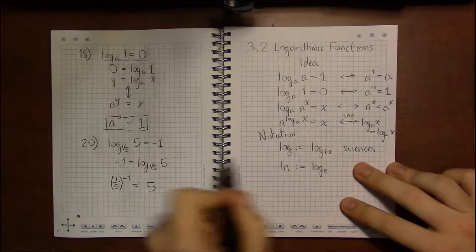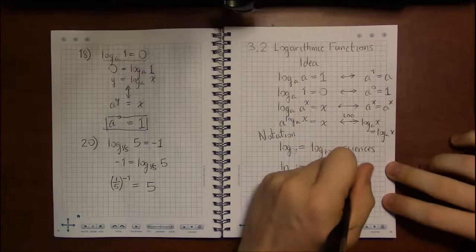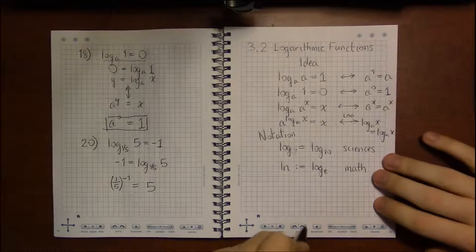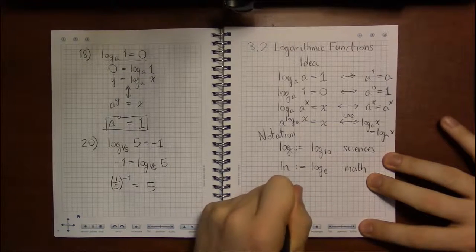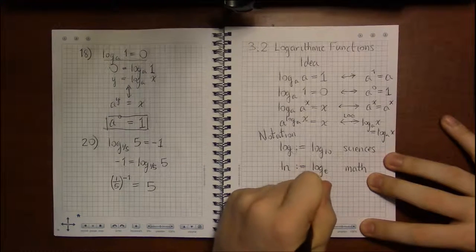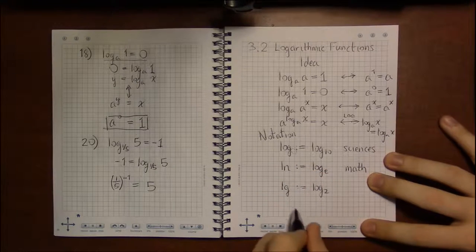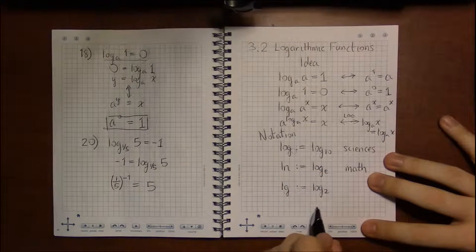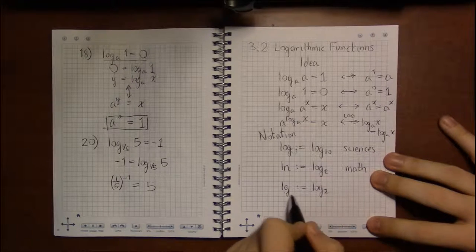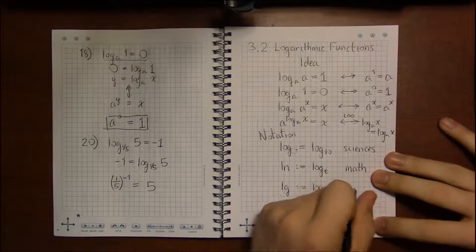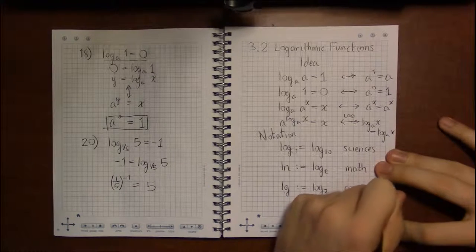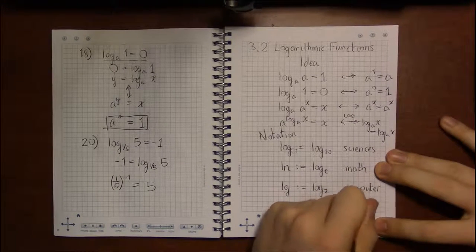And if you remember, e was that weird number that we talked about in 3.1. So this occurs mostly in math classes. There's one the book doesn't mention, but I'm relatively familiar with it from my experience in computer science. Since computers generally deal with on and off zeros, ones, they deal in bits, things of base 2.